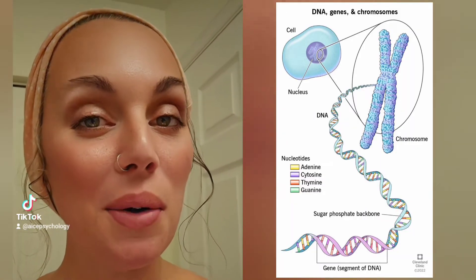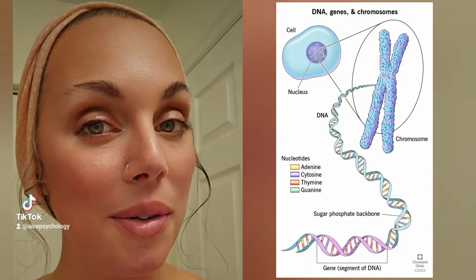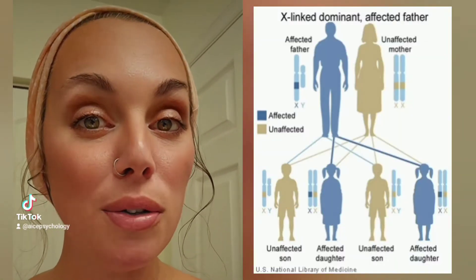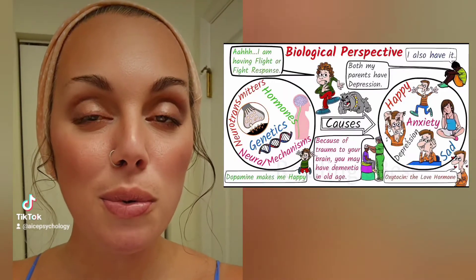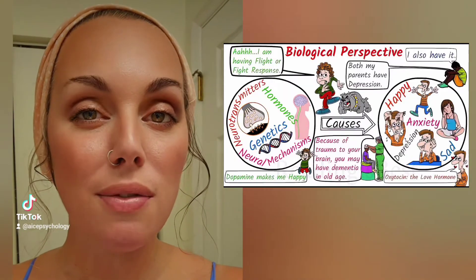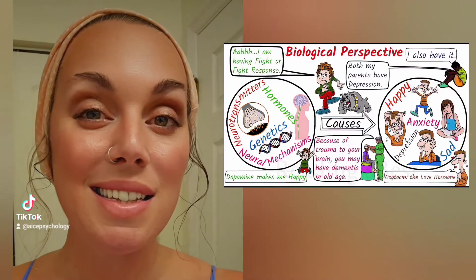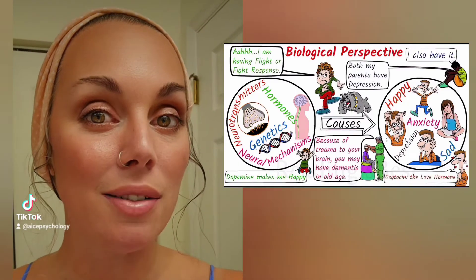Now we're going to talk about genes — more so as a hereditary unit, not the type that you wear. It's basically an instructional manual that is passed down from adult to child. Everyone's genes are completely unique, except for identical twins, specifically monozygotic twins. Our genes determine our biological function and structure, but it's important to know that just because we are born with a specific biological structure, it doesn't stay exactly the same our entire lives.